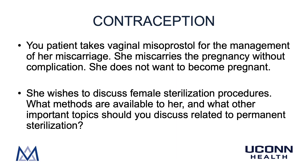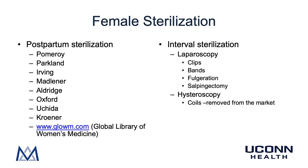Moving on to contraception — your patient takes vaginal misoprostol for medical management of her miscarriage. She miscarries without complication and does not want to become pregnant. She wishes to discuss female sterilization procedures. When discussing female sterilization, this is divided into two types: postpartum sterilization, which occurs immediately during a cesarean section or the day or so following a vaginal delivery, and interval sterilization, which occurs between pregnancies. Since ZC had an early miscarriage, postpartum sterilization would not be appropriate for her. Knowing the difference between the Pomeroy and Parkland techniques — the two most common procedures — is really important for your shelf exam and clerkship rotation.